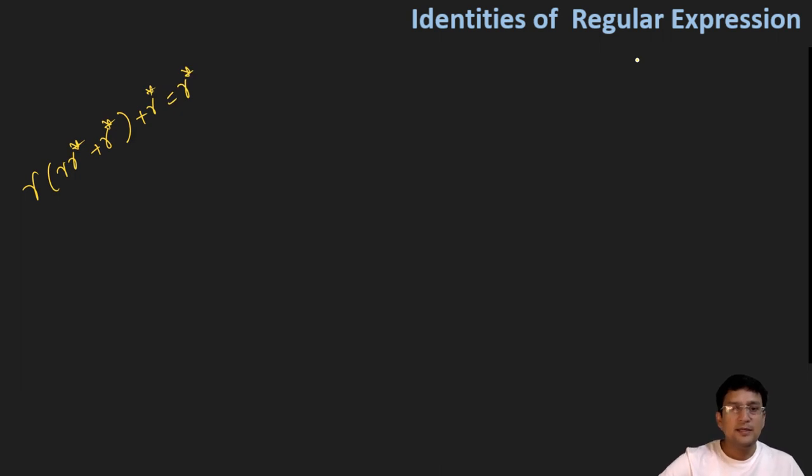So once again, we can say that the left hand side quantity is big, the right hand side quantity is small. So the quantity on the left hand side is R and then R, R star plus R star plus R star, this is equal to R.